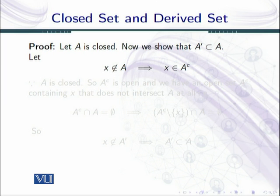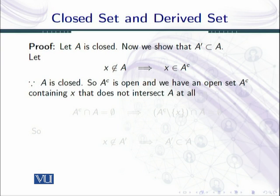Let x belong to the complement of A, that is, x does not belong to A. This implies that x belongs to A complement. But given that A is closed, the complement of A is open, according to the definition of the closed set. So we have an open set A^c containing x that does not intersect A.